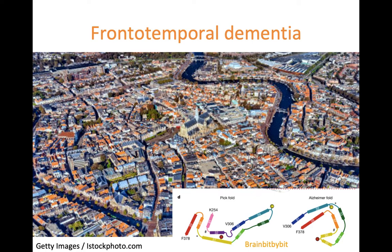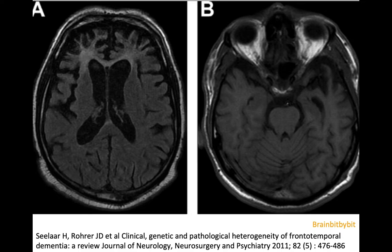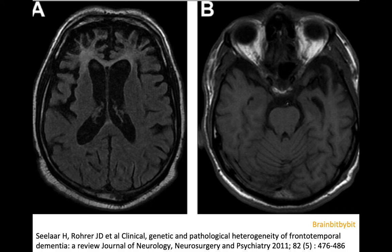Frontotemporal dementia, or frontotemporal lobar degeneration, is the second most common form of dementia occurring mainly in younger patients, which makes it even more tragic and devastating than Alzheimer's disease. Frontotemporal dementia is an umbrella term comprising many different forms of dementia affecting the frontal and temporal lobes, and the involved regions result in different clinical patterns and different MRI patterns.